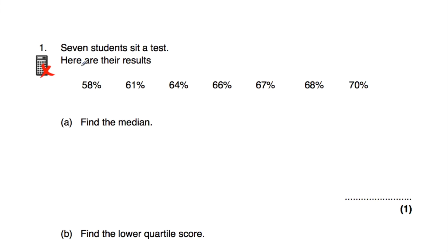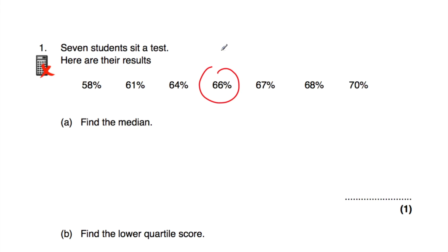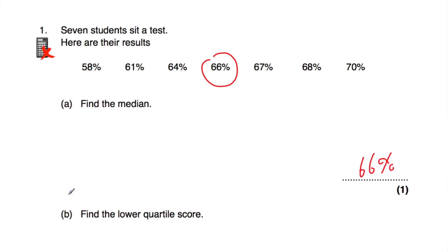In terms of our first question, it says seven students did a test and here are their results. If we look at them, they are in order — that's fantastic. The first question says find the median. The median is the middle value, so the middle value will be 66%. So that's going to be the median, 66%.